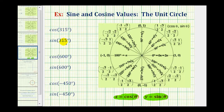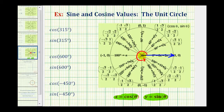we'll sketch 315 degrees in standard position. Here's the initial side. Now we'll rotate counterclockwise 315 degrees. If we rotate three quarters of a turn to here, this would be 270 degrees. So we need to rotate 45 degrees more to reach 315 degrees, which would be here. Here's the terminal side of 315 degrees.